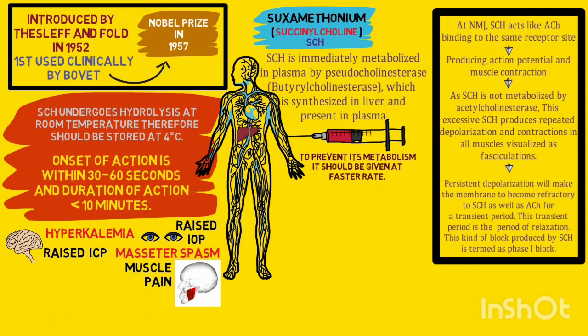Muscle pains due to muscle contractions can be minimized by precurarization. Precurarization is the technique in which one-tenth dose of a non-depolarizing muscle relaxant is given three minutes prior to succinylcholine. This small dose blocks some receptors, which decreases fasciculations and reduces myalgia. This technique can also prevent the rise in intracranial and intragastric pressure, but does not reliably prevent the rise in intraocular pressure.